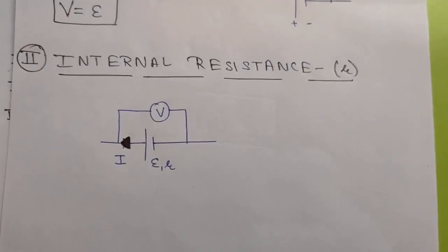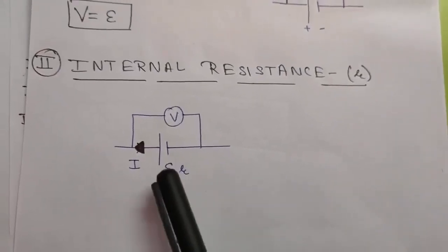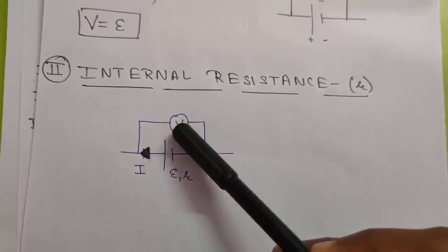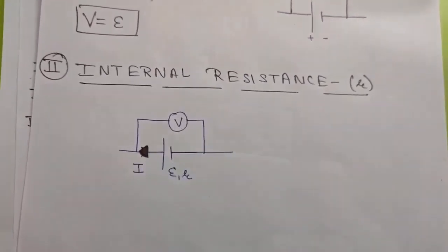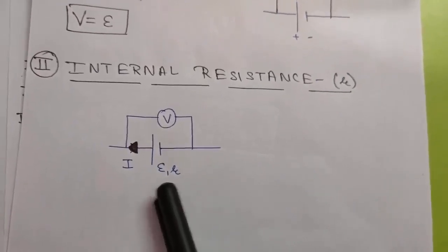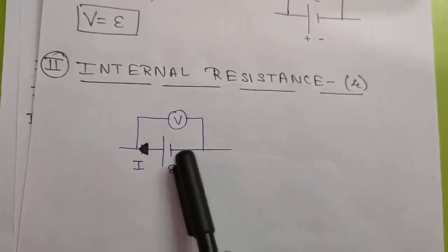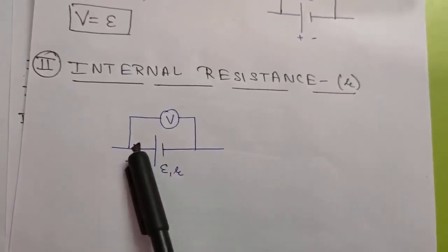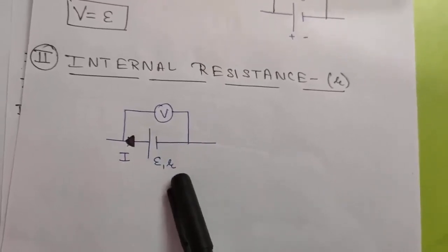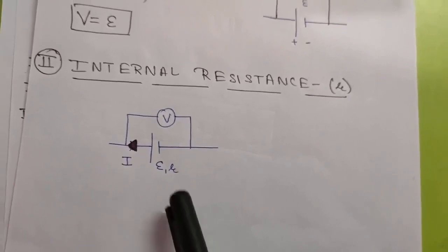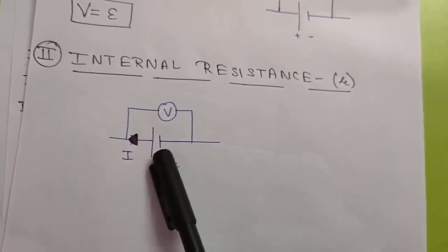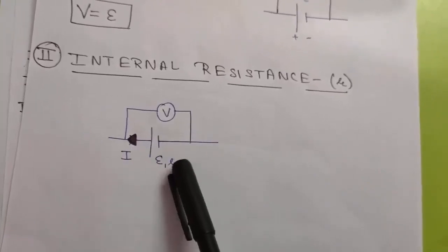The next is internal resistance. Here is a cell of EMF E and internal resistance R. A voltmeter is connected across it and current I is flowing through it. As you know, resistance always resists the path of current. So when current I flows through a cell, its resistance resists it. Internal resistance is defined as the resistance offered by the electrodes of a cell when current I flows through it.